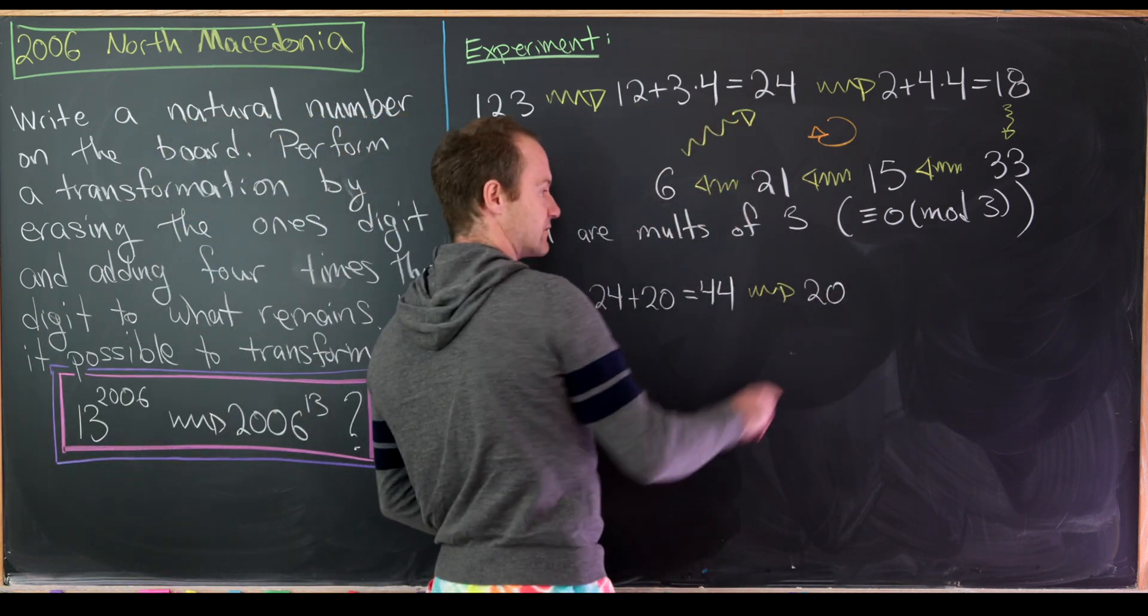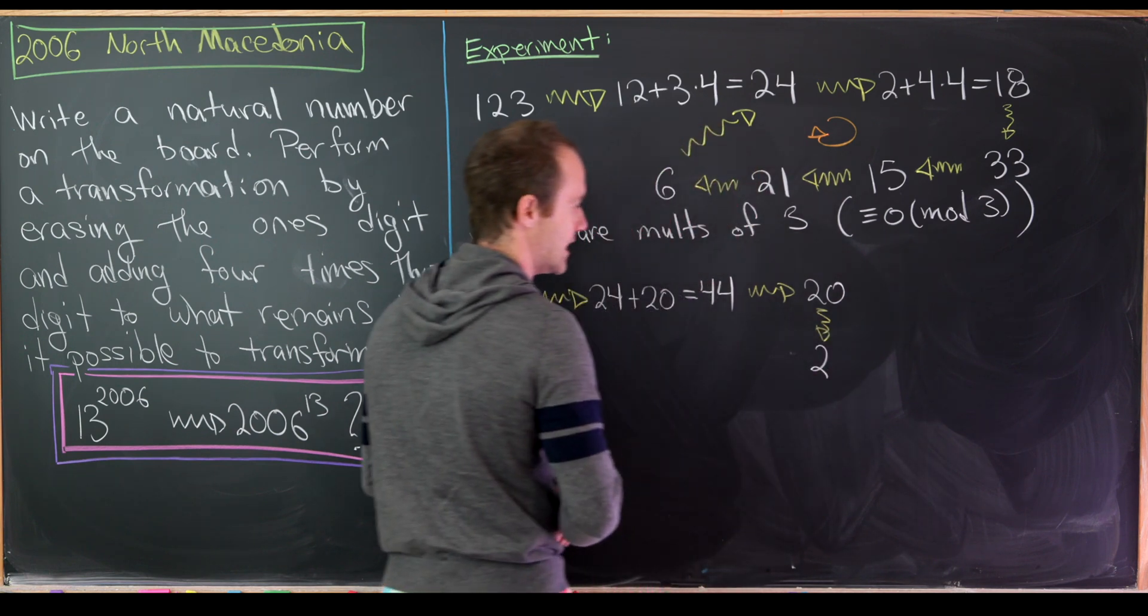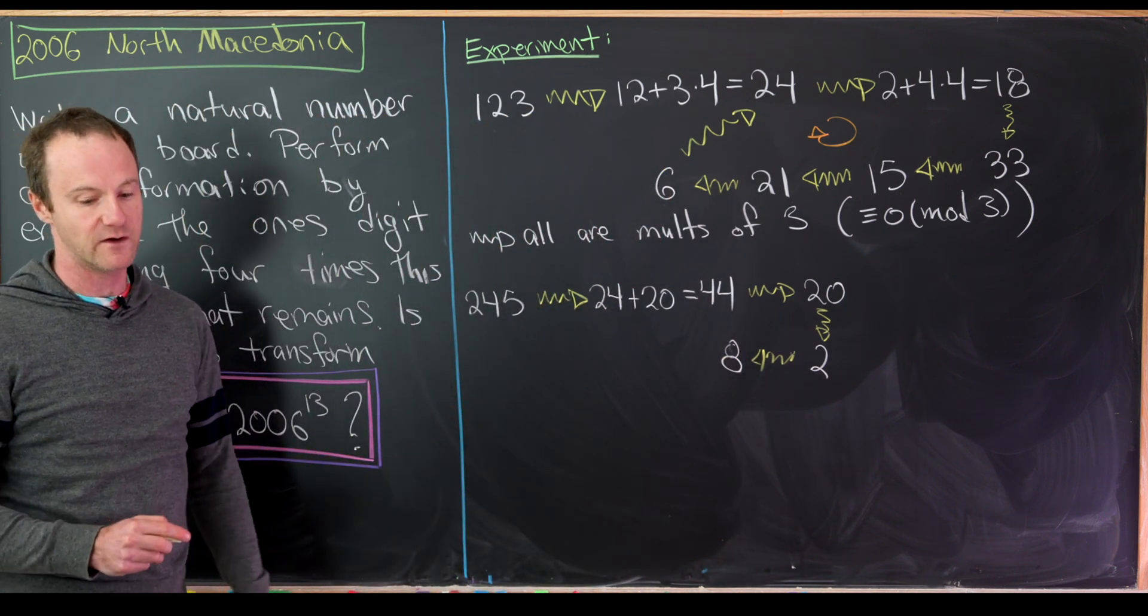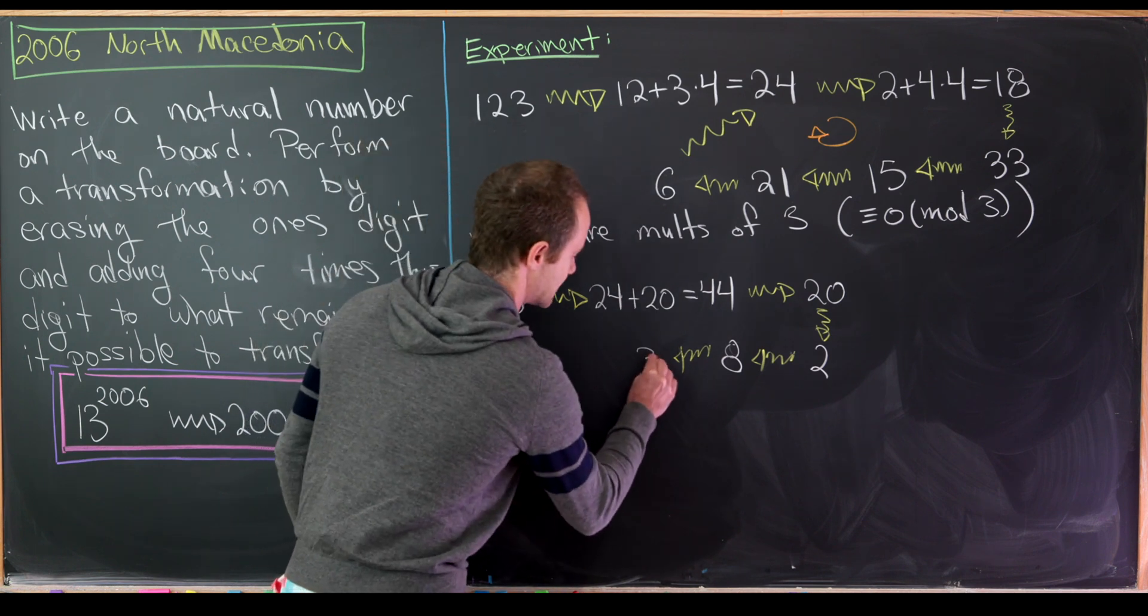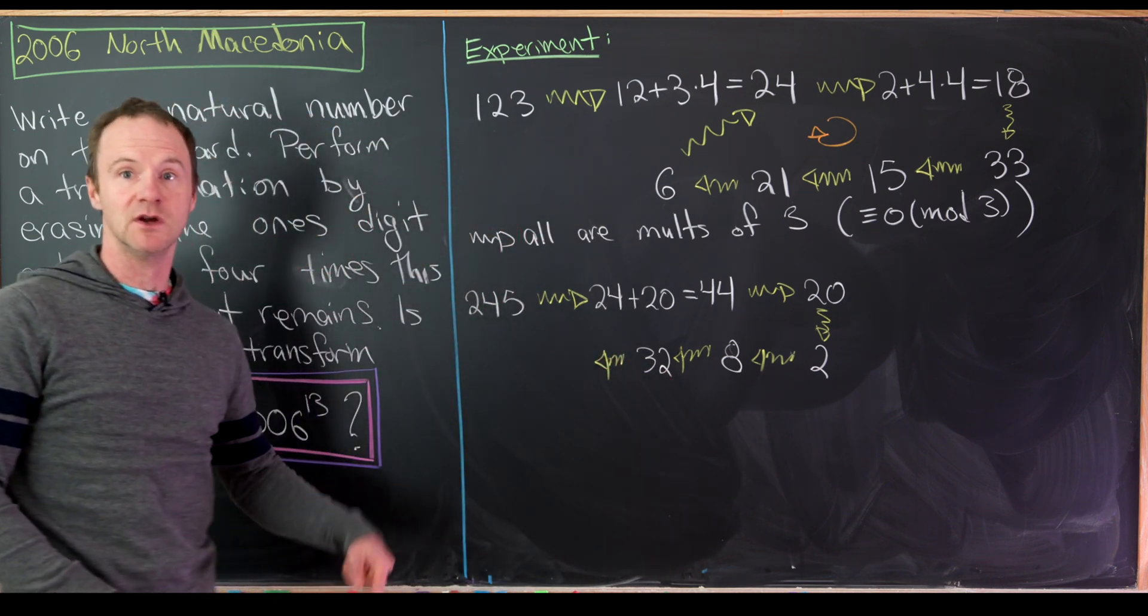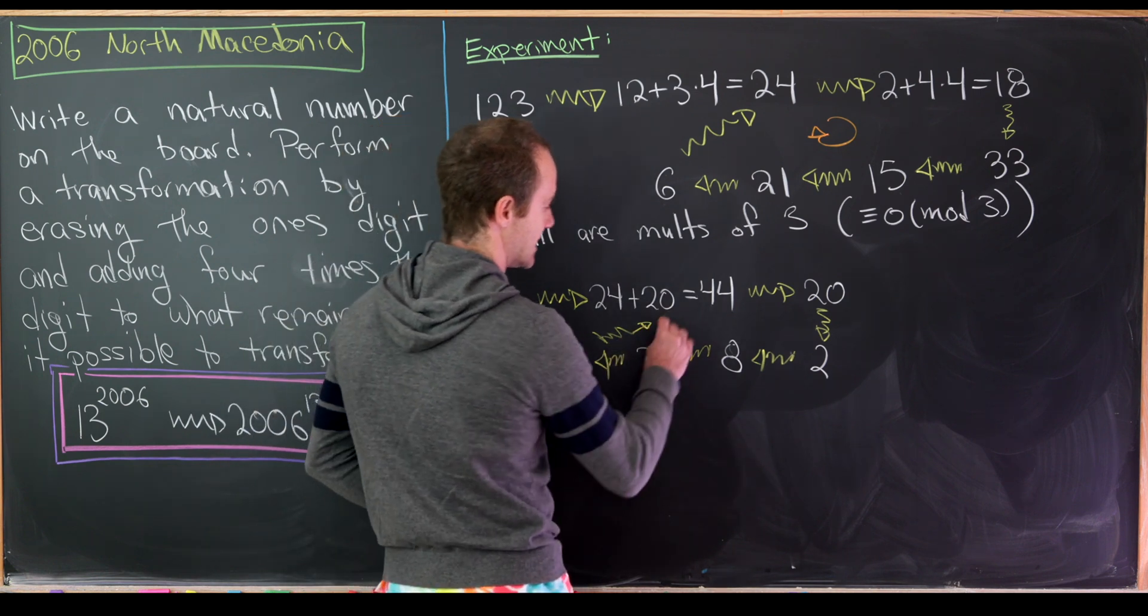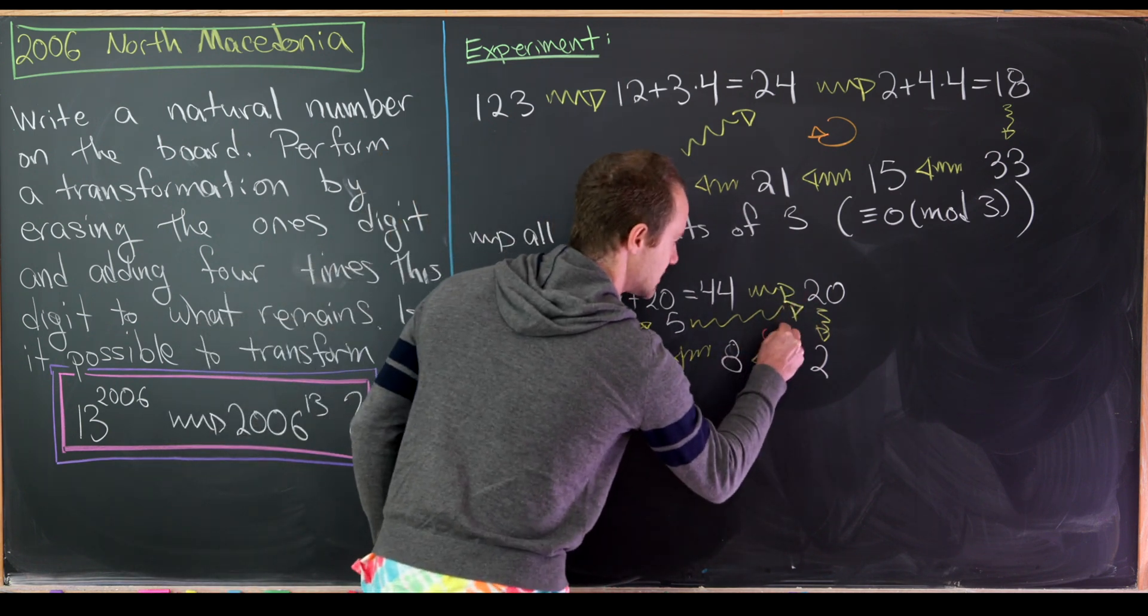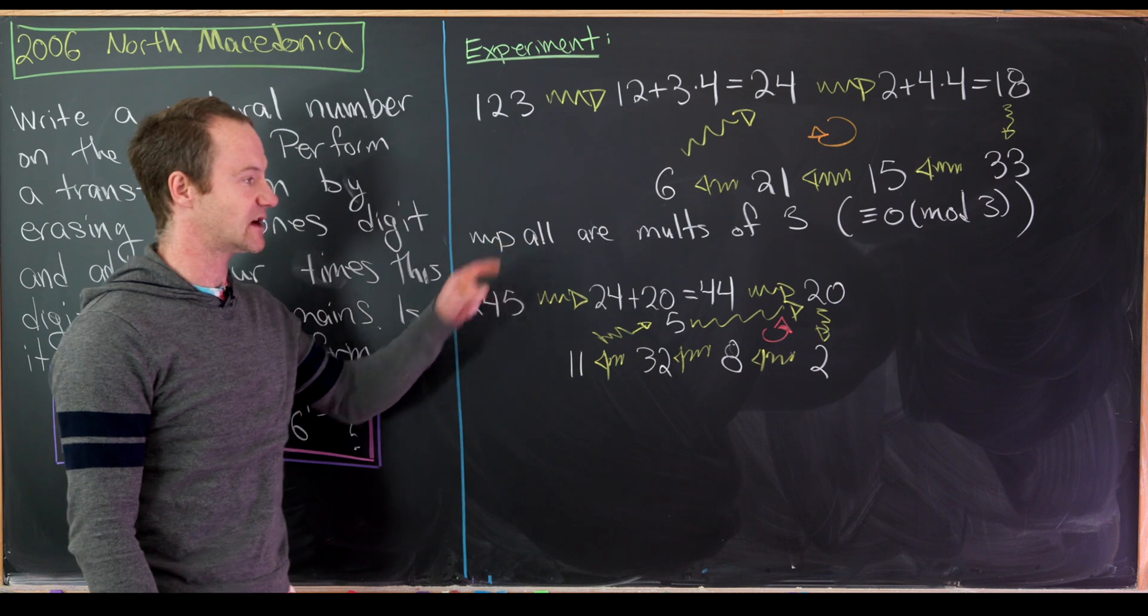We'll erase the 0, multiply it by 4 giving us 0, add it to the 2. So that gives us 2. From there we'll get 8 pretty clearly because we just multiply by 4. Once we get to a single digit number it's equivalent to multiplying by 4. Then 8 will turn into 32. And then finally 32 will turn into 11, because we erase 2, multiply it by 4 which gives us 8, add it to 3 that's 11. Then the next number will be 5 using the same rule again. And then 5 will take us all the way back to 20. So we've built a little loop right here.